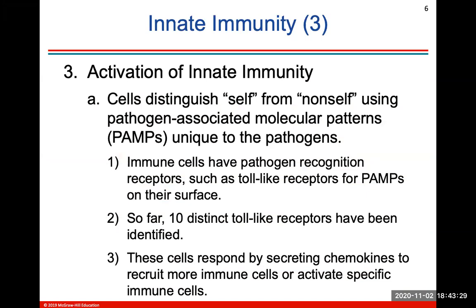Activation of innate immunity occurs when cells distinguish self from non-self using what we call pathogen-associated molecular patterns, which are very unique to a specific type of pathogen. Basically, cells can distinguish what is itself and what is non-self, which would be some sort of pathogen or pathogen-associated molecular pattern.